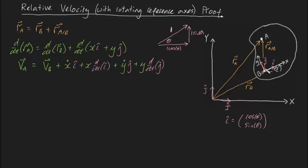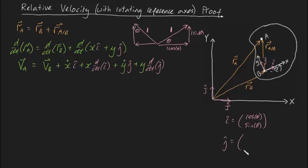Now let's consider unit vector j. It also has a magnitude of one. Since the angle between i and j is 90 degrees, we know the relevant angle here is theta, which means the components work out so that j can be written as negative sine(theta) in the capital I-hat direction plus cosine(theta) in the capital J-hat direction. So we've now found expressions for both rotating unit vectors.